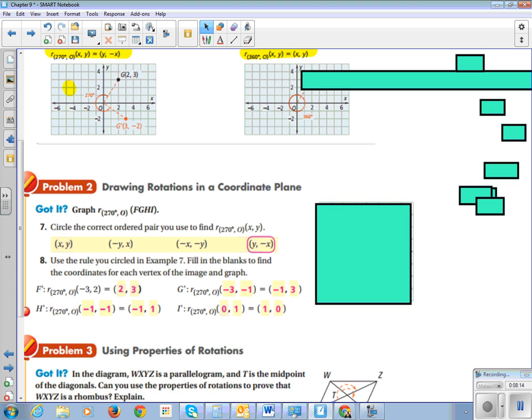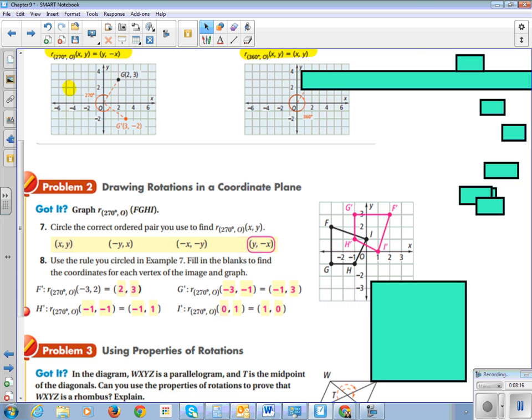So, if I graph that, 270 degrees takes it three fourths of the way around the circle.